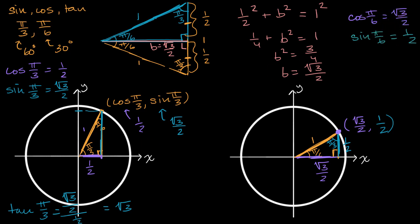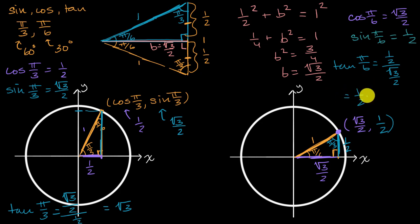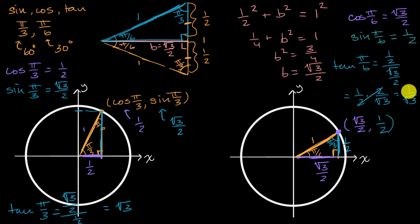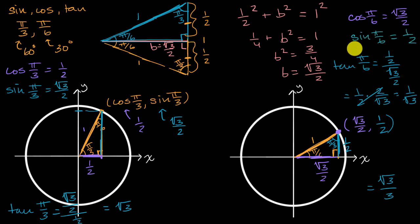The tangent of pi over six is sine over cosine — that's one half divided by square root of three over two, which equals one half times two over square root of three, giving one over square root of three. If you don't like radicals in the denominator, multiply numerator and denominator by square root of three to get square root of three over three. Either way, we're done — it's very useful to know the cosine, sine, and tangent of both pi over three and pi over six, and now you also know how to derive them.